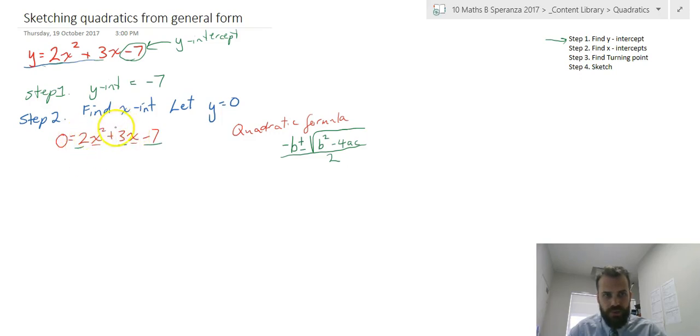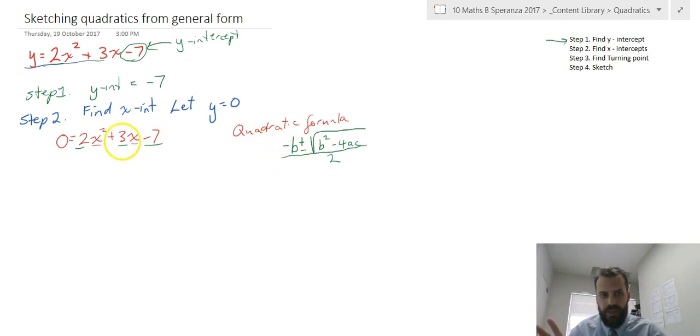So a is 2, b is positive 3, and c is negative 7. The best way to do it is to replace the letter with the number in brackets. So it's going to be negative 3, plus or minus the square root of 3 in brackets squared minus 4 times a, which is 2, times c, which is negative 7.